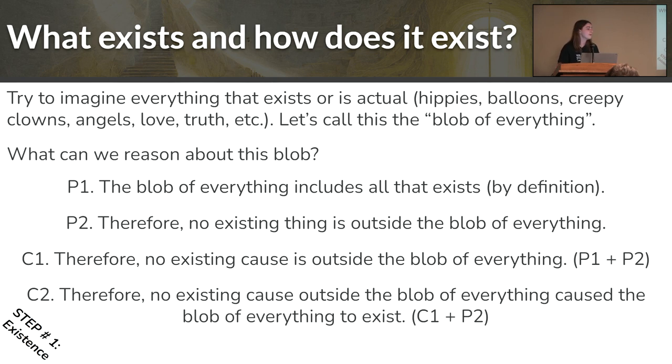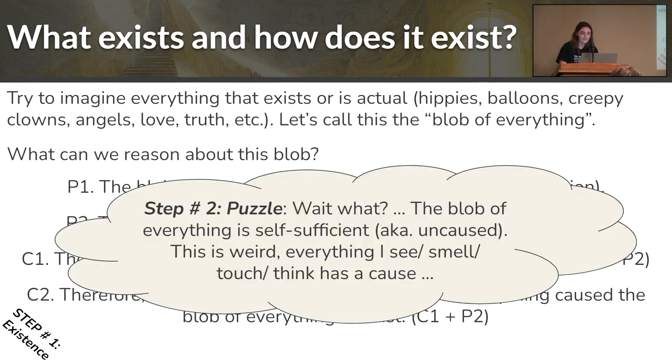Therefore, there is no existing cause outside the blob of everything that caused it to exist. At first, of course, this is logical and reasonable. But it's kind of weird, because everything we typically see in life, be it happiness or a dog or a cat or rain, it has a cause. These things that we see actually have some sort of reason for their existence.